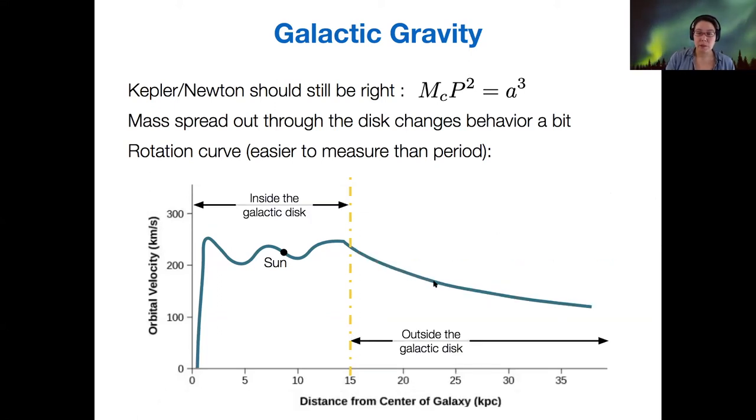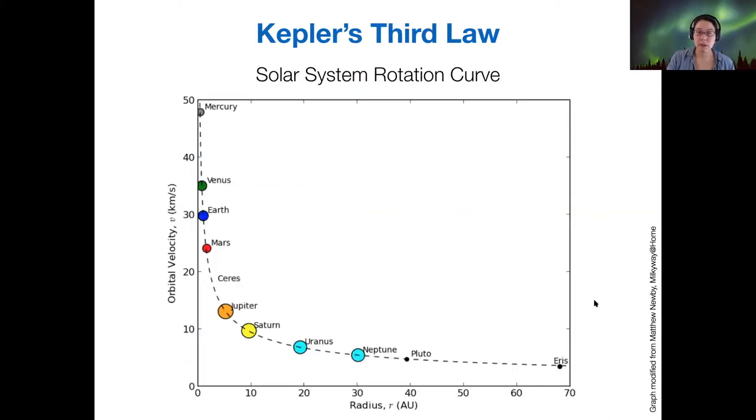this is what we expect to find is that the orbital period, just like our rotation curve for the solar system should get slower and slower as we get farther from the disk. So this is the same relationship, the downward sloping curve.